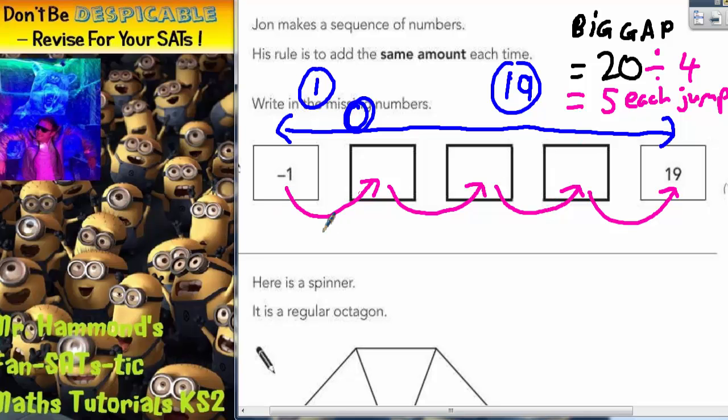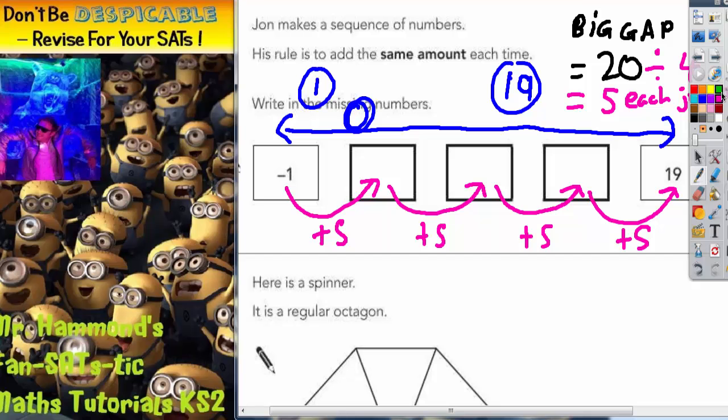So on the first jump we're going to add 5. The second jump is add 5. Add 5 on all of the jumps. So what we need to do now is start using this information to fill in the missing boxes.